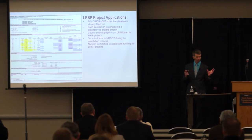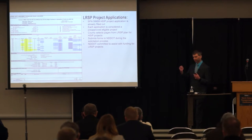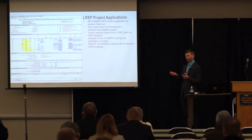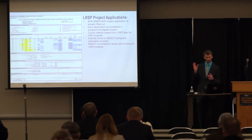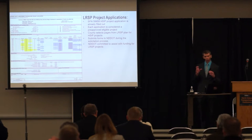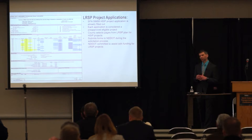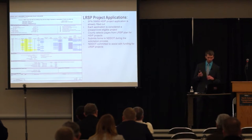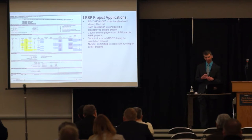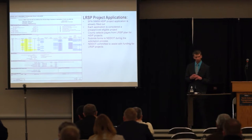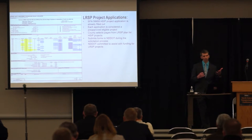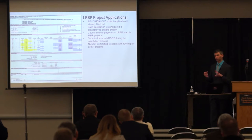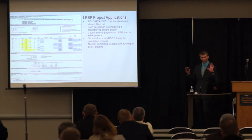This is a typical page from the local road safety plan and it can act as an application — it can be torn out, copied, or emailed to submit for HSIP projects. It's an easy process for locals to look at their local road safety plan, grab the sheet, and send it in. Each application in the local road safety plan is considered a pre-approved eligible project for HSIP funding. You submit the form directly through the solicitation process, and the North Dakota DOT is committed to splitting the available funds 50-50 between the state system and the local system.